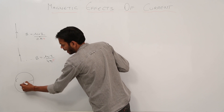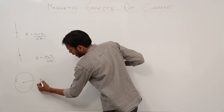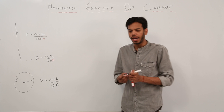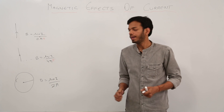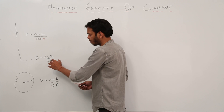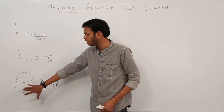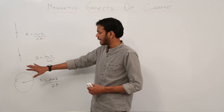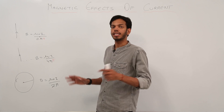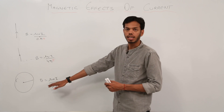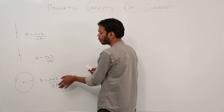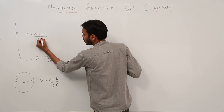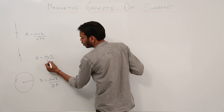For a circle, the magnetic field at the center is B equal to mu-naught I upon 2R. Now, the symbol pi is associated with circles in a lot of ways — like circumference, area, etc. So this is how I remember it: pi is not in the formula for a circle. The formula for a circle is mu-naught I upon 2R, for infinite length it is mu-naught I upon 2 pi R, and for semi-infinite it is mu-naught I upon 4 pi R.